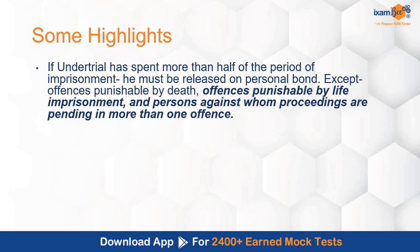If an under-trial has spent more than half of the period of imprisonment, he must be released on a personal bond. This provision was already there in the old CrPC. An under-trial prisoner is the accused person who has not yet received a conviction. If he has spent more than half of the period in jail, he must be released without any conditions, without needing to apply for bail. This change came after several landmark Supreme Court decisions, because earlier, accused persons suffered the entire term of imprisonment for an offence and were not even convicted later on.